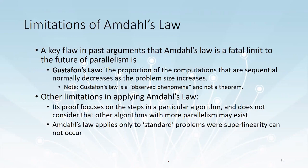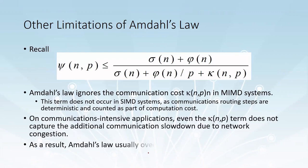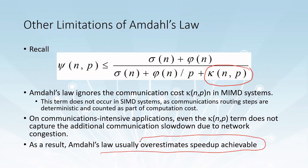What are the limitations of Amdahl's law? Amdahl's law puts a limit on parallelism — it says the maximum speedup for a given program is fixed. It doesn't consider variant possibilities of the same program, assuming a fixed ratio of sequential to parallel code. Another key limitation is that Amdahl's law completely ignores the term kappa — the communication overhead. Whenever more than one processor is involved, there is always communication overhead. As a result, Amdahl's law usually overestimates the speedup available.